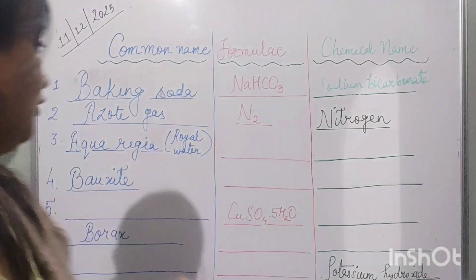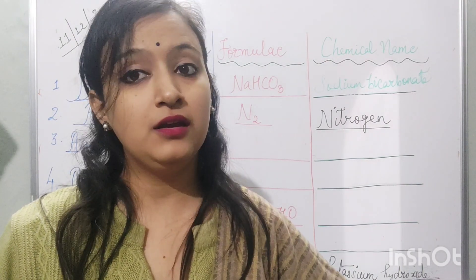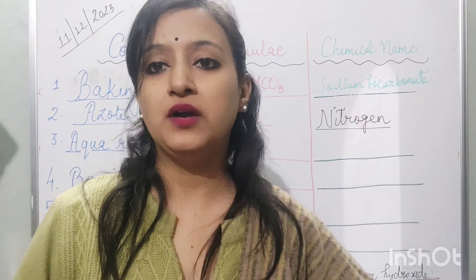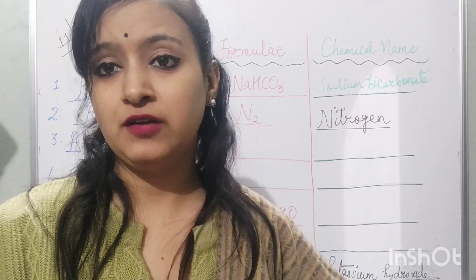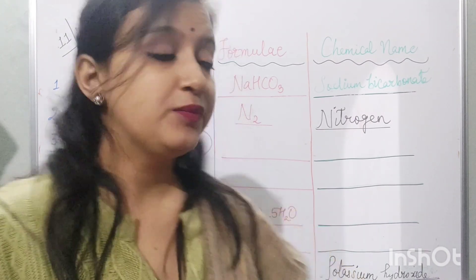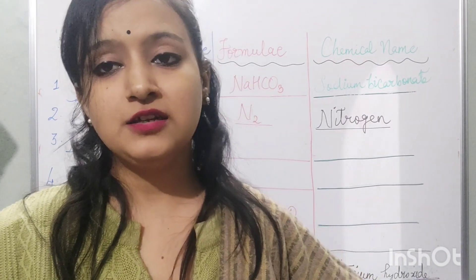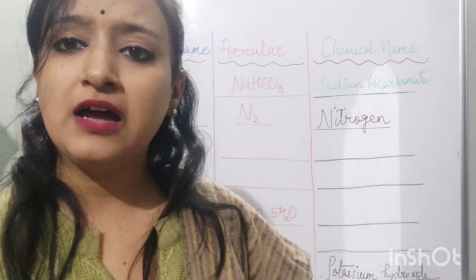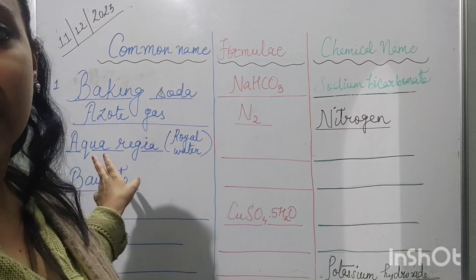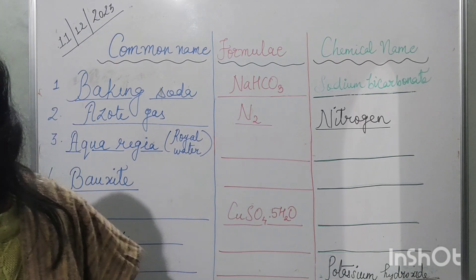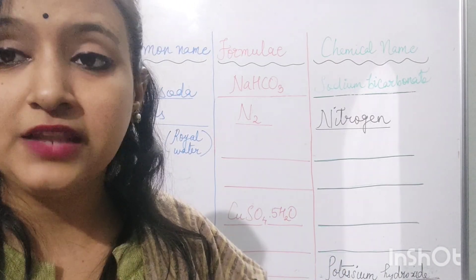Next is aqua regia — a very important compound you must have studied in the acids and bases chapter and the metals and non-metals chapter. Aqua regia is a very strong, highly corrosive mixture prepared by combining two highly concentrated acids: concentrated hydrochloric acid and concentrated nitric acid, combined together in a ratio of 3:1 by volume. 'Aqua regia' translates to 'royal water' — can you guess why it is named so?